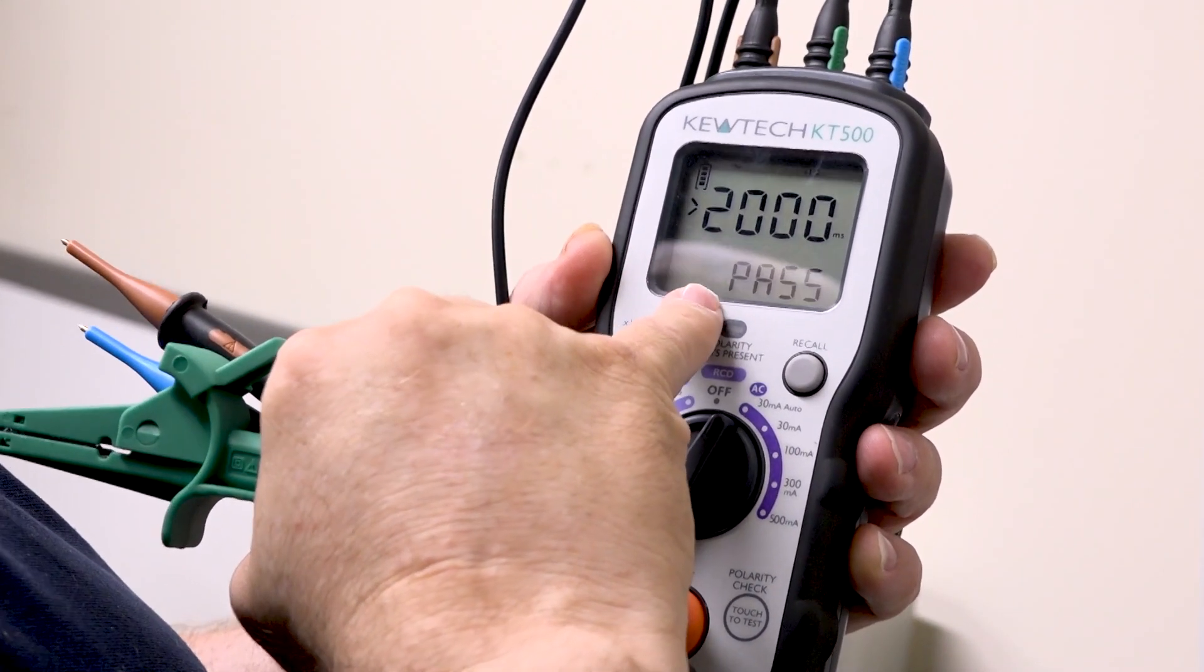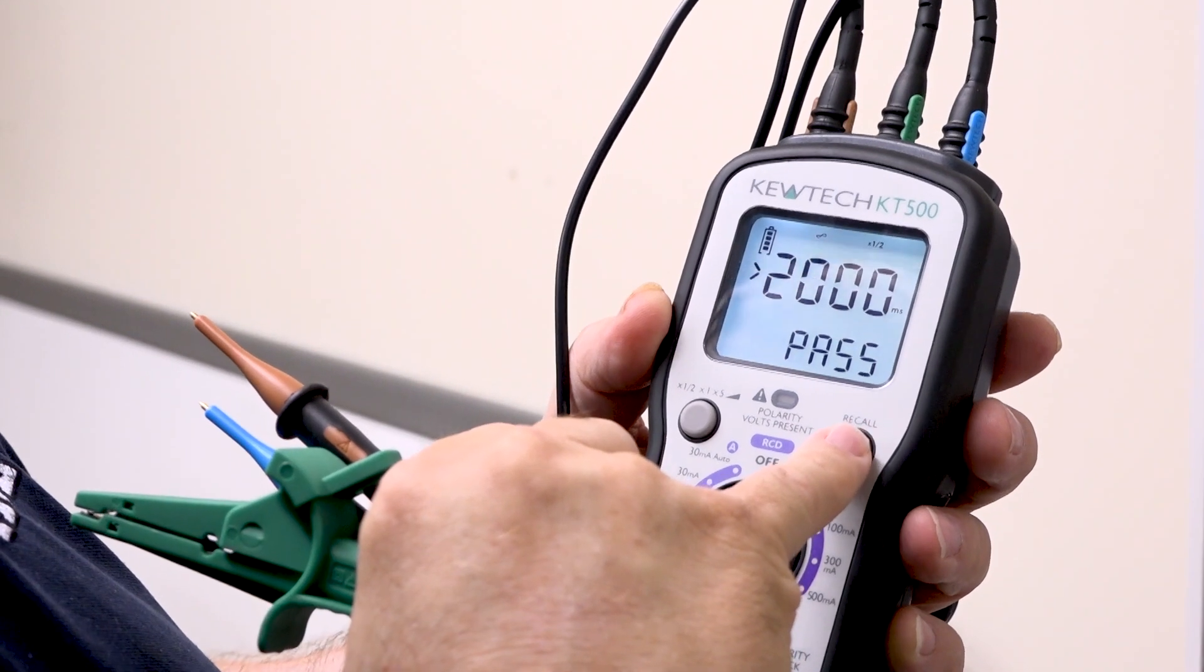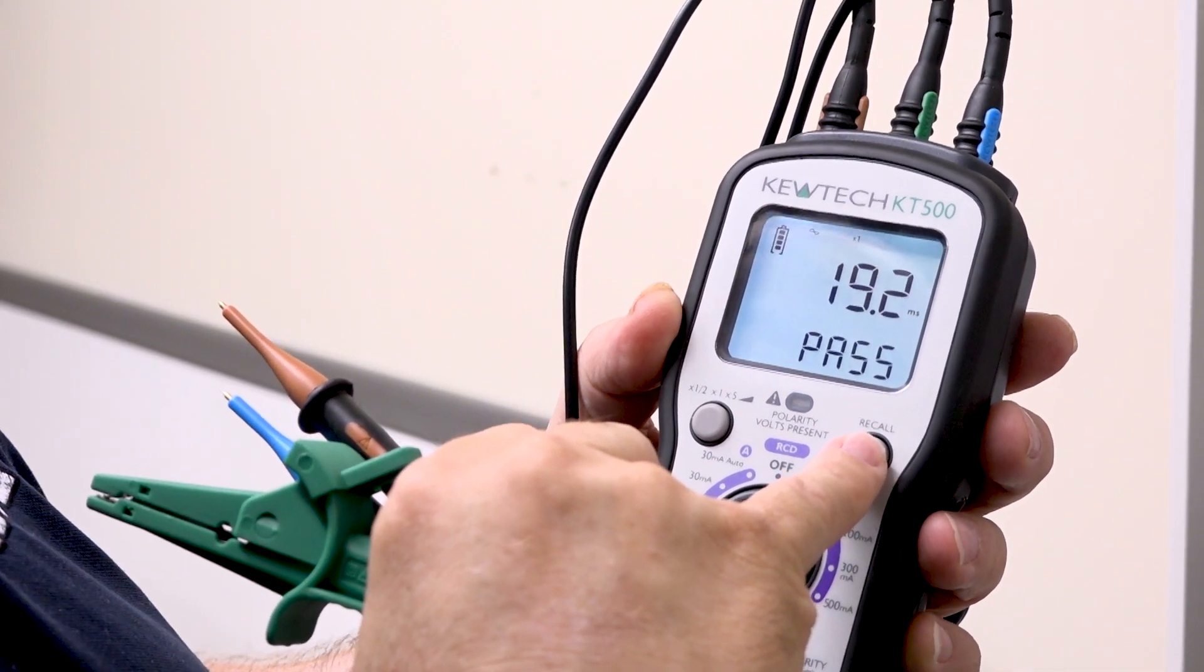So there's no trip, no trip—in two seconds, which is 2000 milliseconds, indicating the pass. There's the other half of the sine wave. And times one, we've got 19.2, so you just say 20.